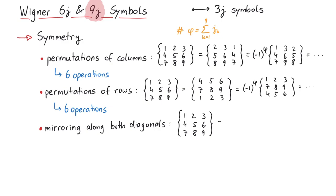However, those are not independent, since mirroring along one diagonal can be represented by mirroring along the other diagonal plus some permutations. Therefore, we can only count one reflection along a diagonal, which doubles the symmetry operations. Multiplied together, that's 72 operations.